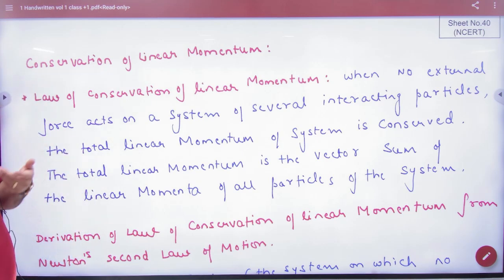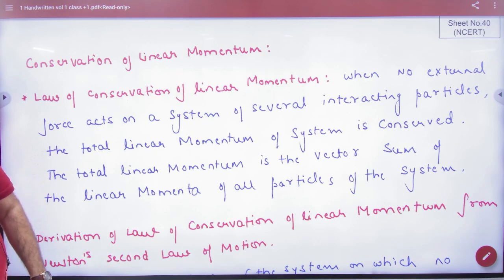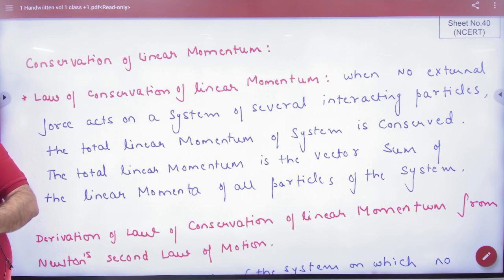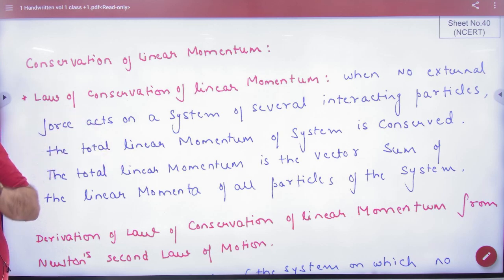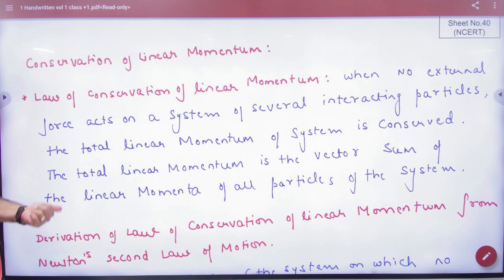But sometimes a teacher asks: what is the law of conservation of linear momentum? I have told you that F is equal to dp by dt. If F is equal to zero, then p is a constant. But how do we write it? We will write it like this: when no external force acts on a system, the value of F will be zero.